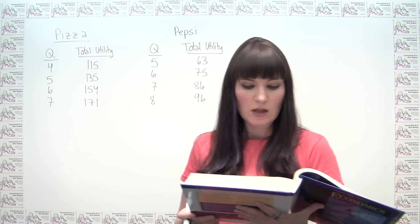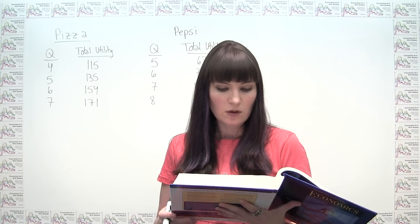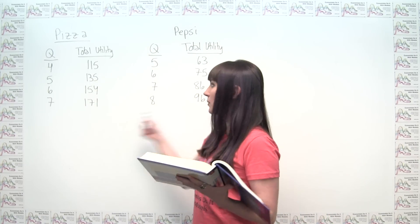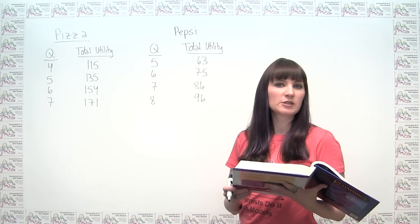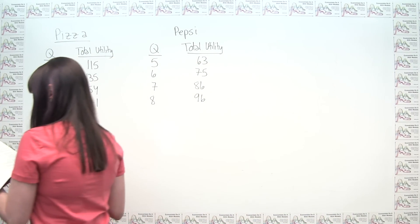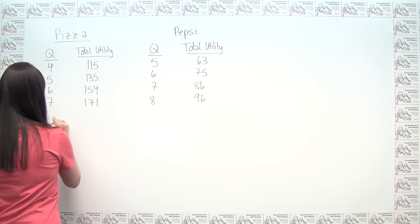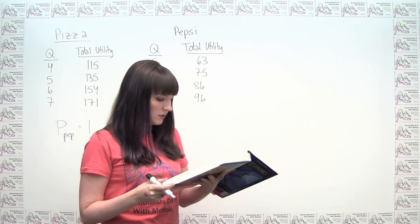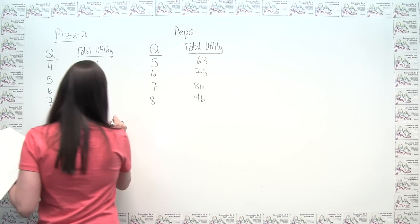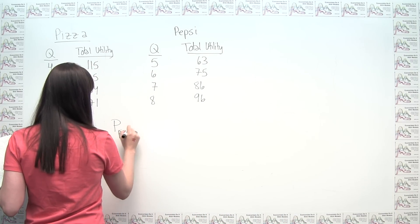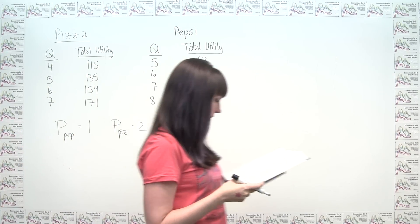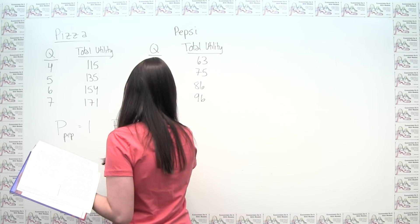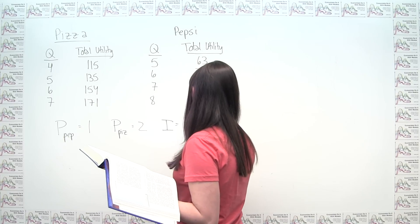The problem says: Anita consumes both pizza and Pepsi. The following tables show the amount of utility she obtains from different amounts of these two goods per week. We're told that Pepsi costs $1 per can, so the price of Pepsi equals 1. Pizza costs $2 per slice, so P sub pizza equals $2. And Anita has $18 to spend on these two goods each week, so her income I is $18.